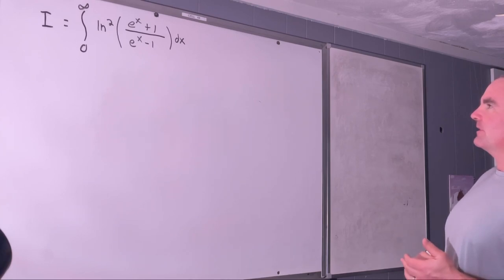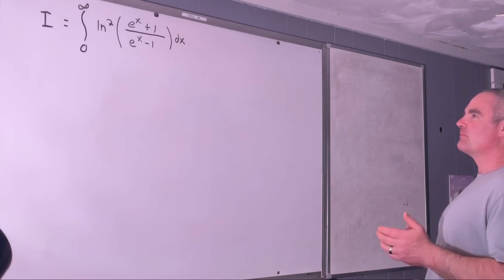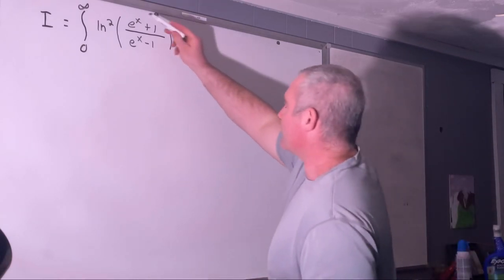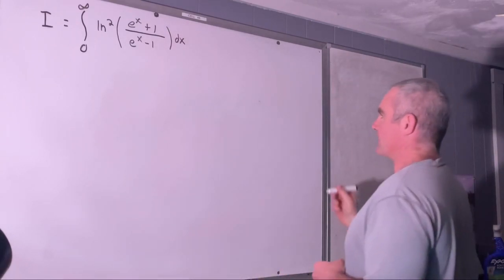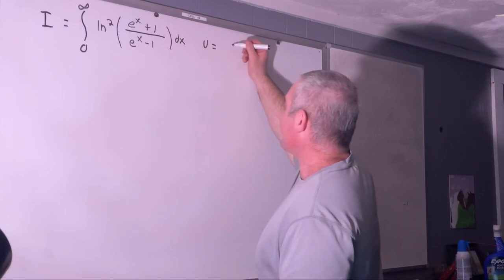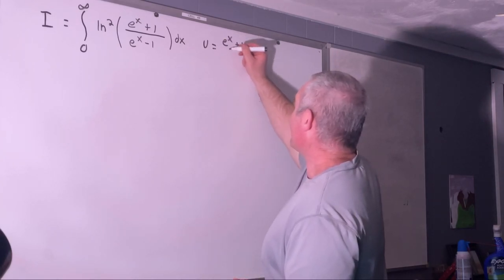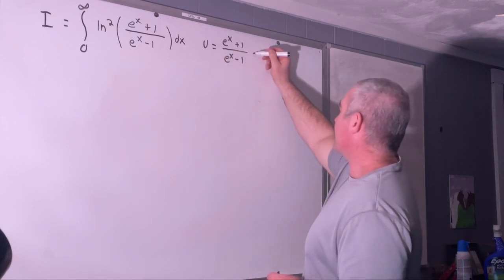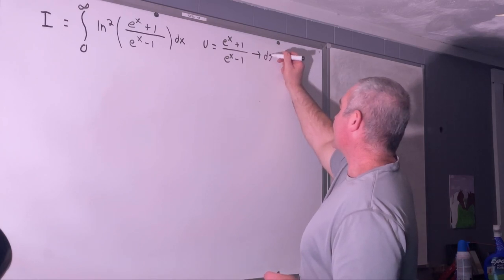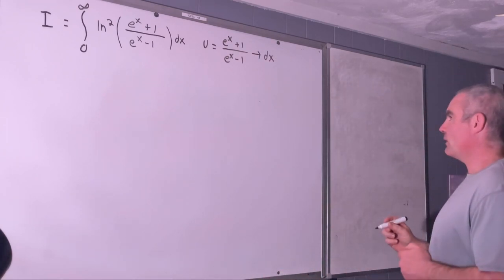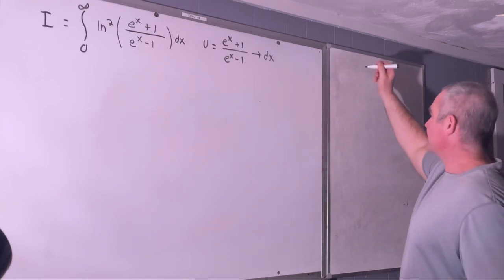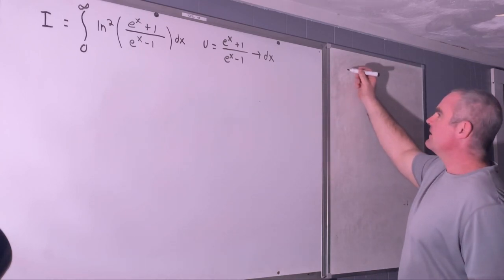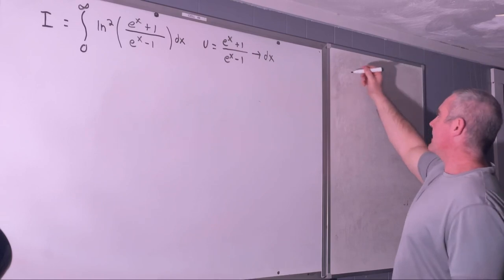Nobody owns math, so let's just get into it. The first step is I don't like this e to the x plus 1 over e to the x minus 1, so I'm just going to set that equal to u. We'll let u equal e to the x plus 1 over e to the x minus 1. Now let's see what that's going to give us for dx. We're going to have to solve that for x, so let's try to get all our e to the x terms on one side. We'll multiply both sides by e to the x minus 1, giving us u·e^x minus u equals e^x plus 1.